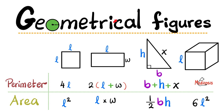In previous videos, we talked about how to do math without a calculator. We talked about how to find the slope, as well as the measure of central tendency, such as the mean, the median, and the mode. Today, we'll talk about geometrical figures — the perimeter and the area for each when they are two-dimensional, but when they are three-dimensional, we'll talk about the volume and the surface area.